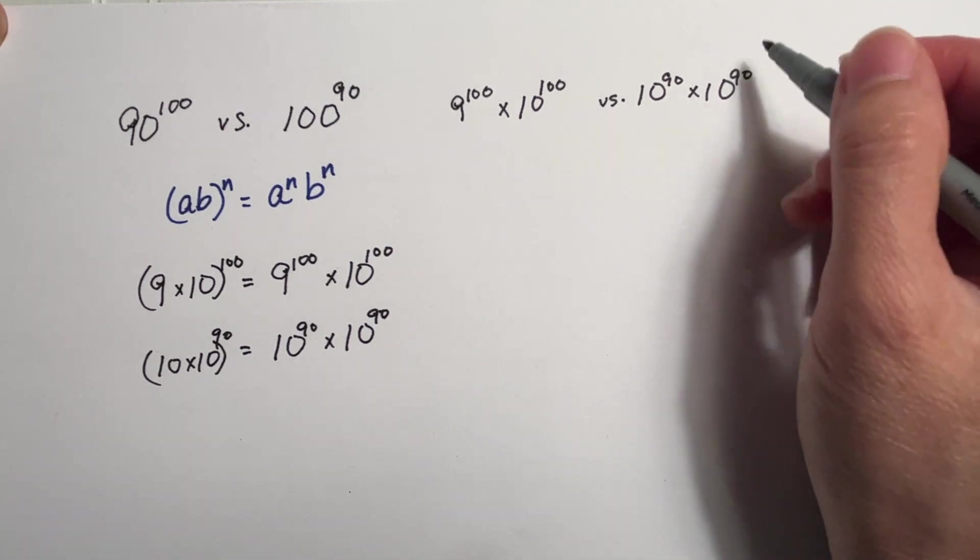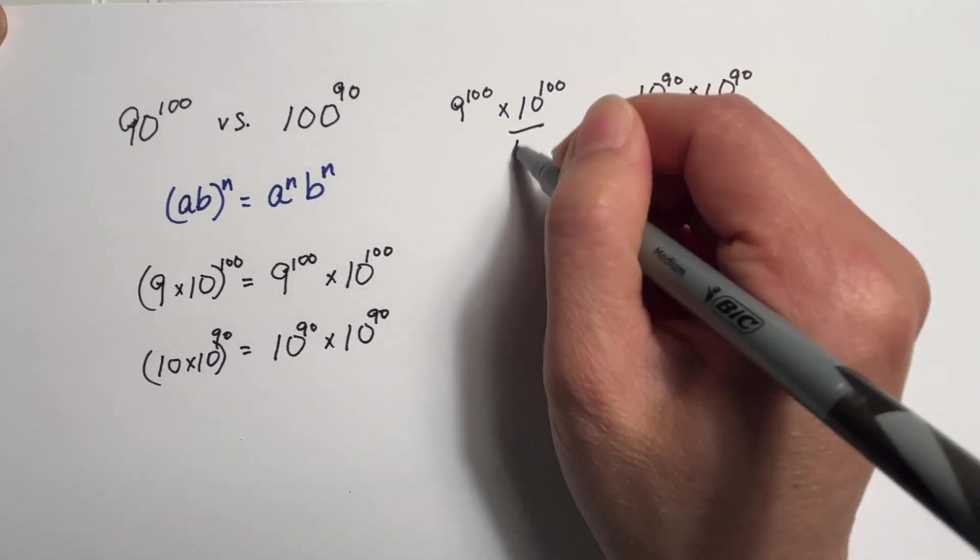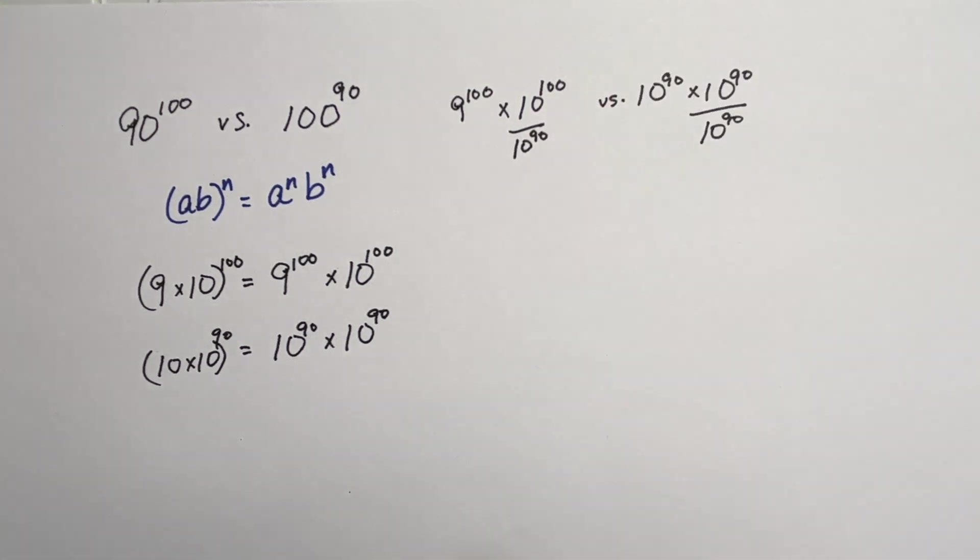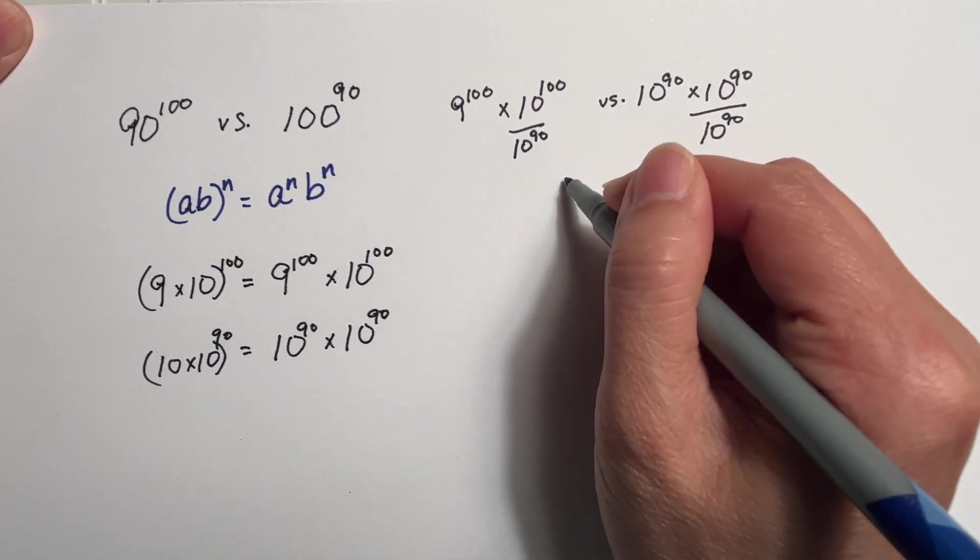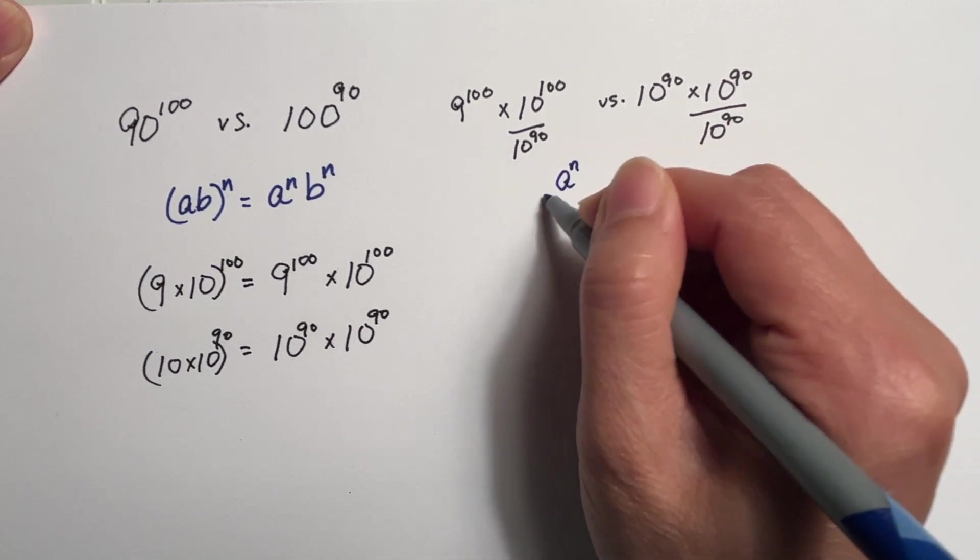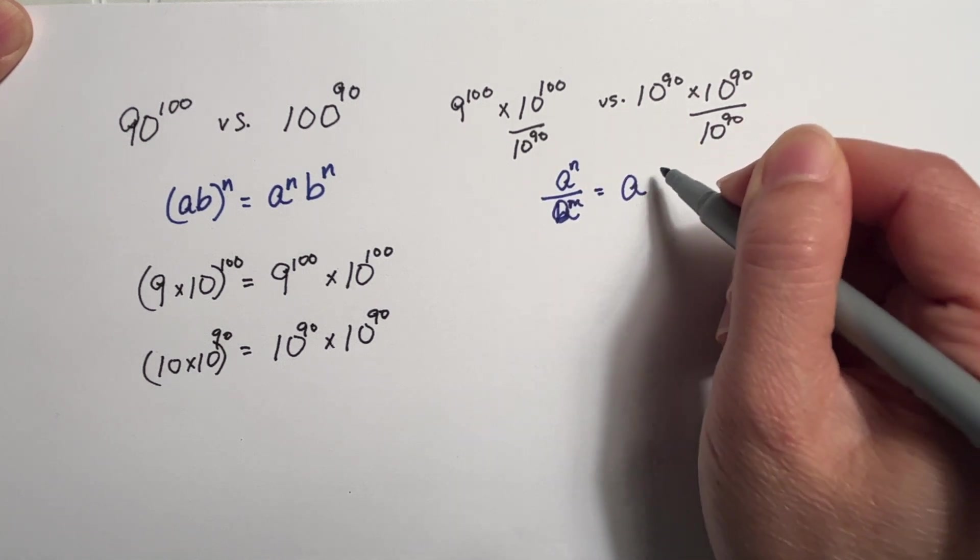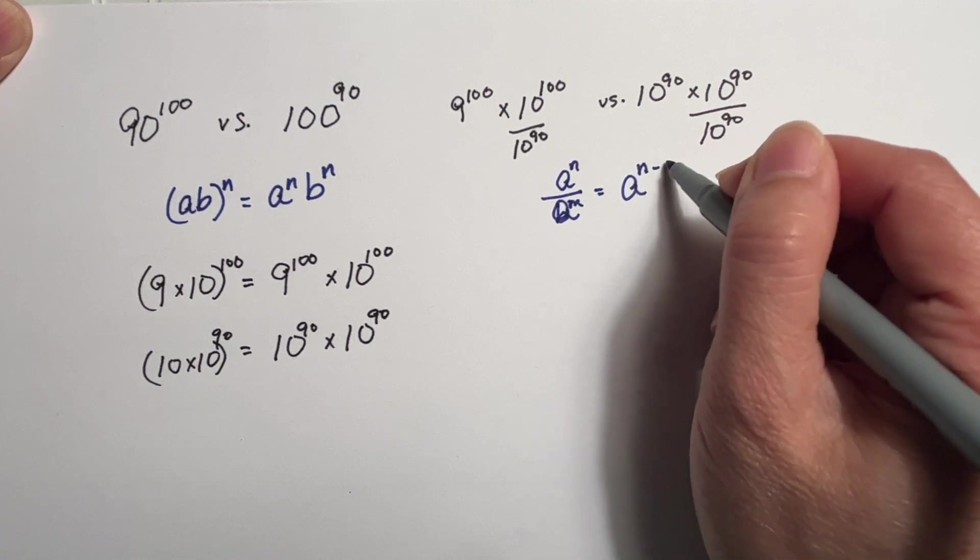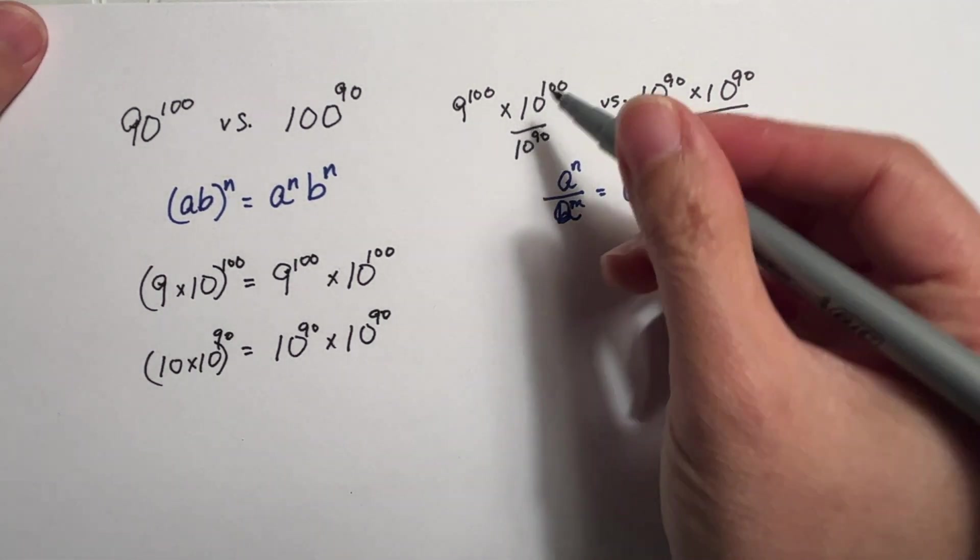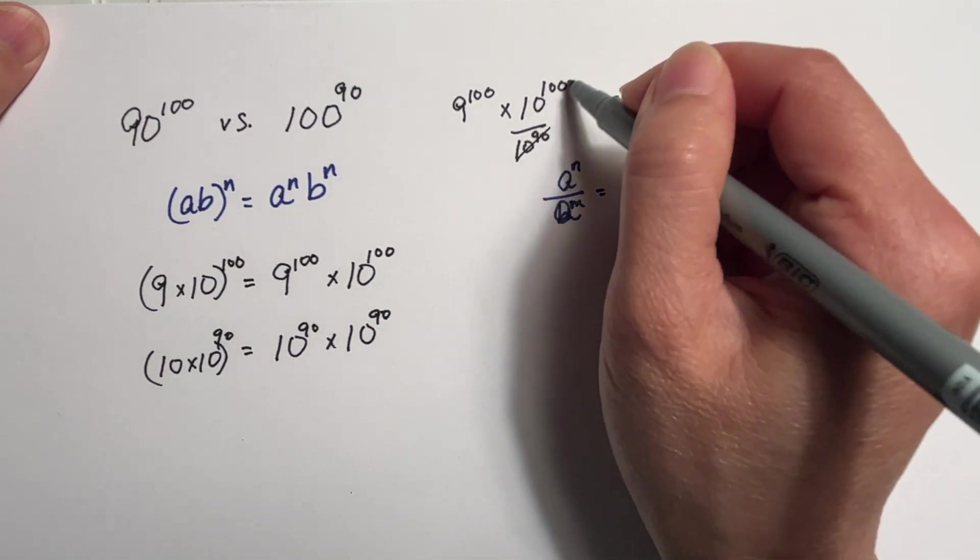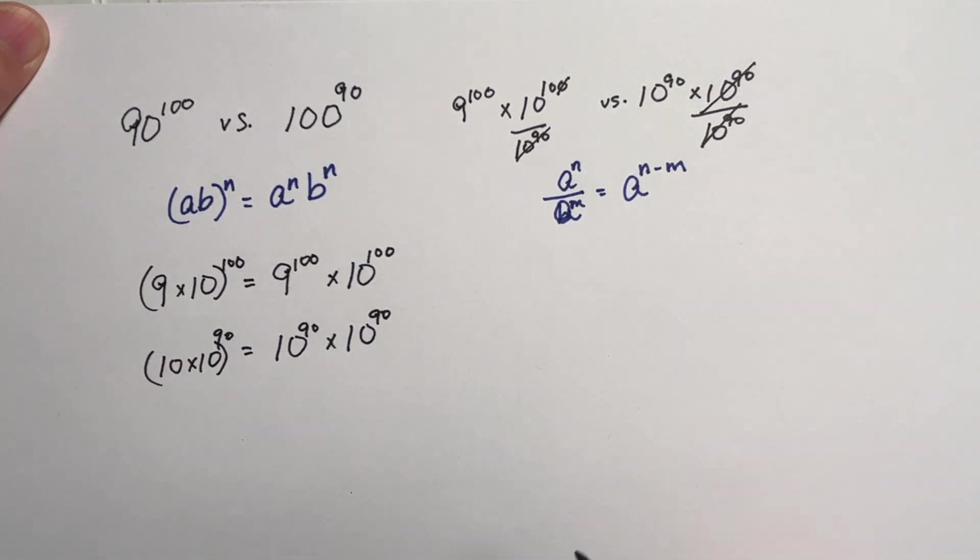Here what we can do is divide 10 raised to the 90 on both sides. And there's another formula that we need to remember to use: a raised to the n divided by a raised to the m is equal to a to the n minus m. So this will become 10 raised to the 10. This will cancel out.